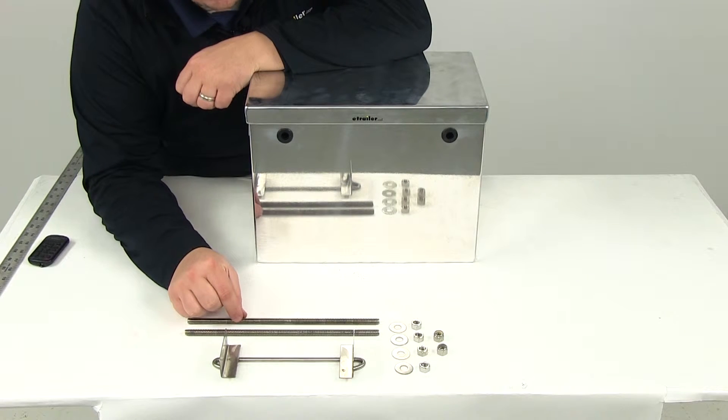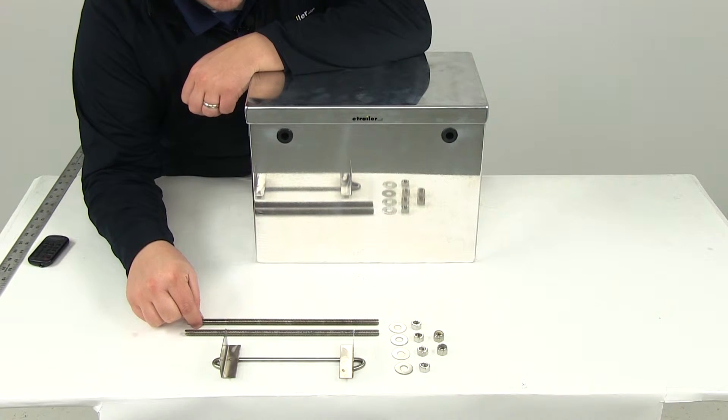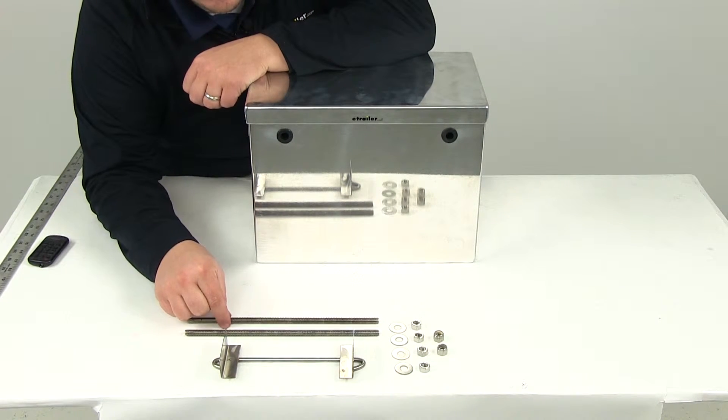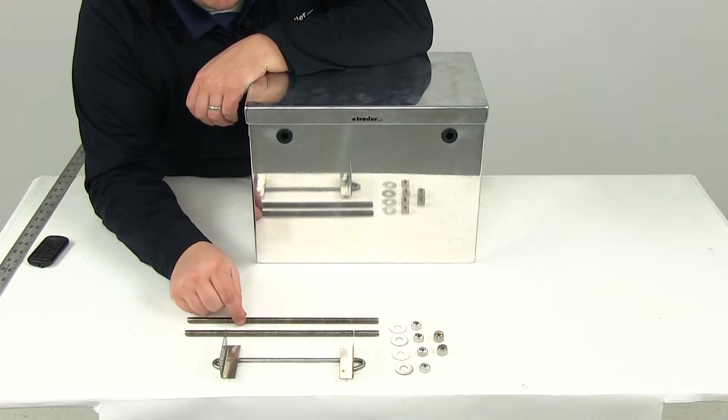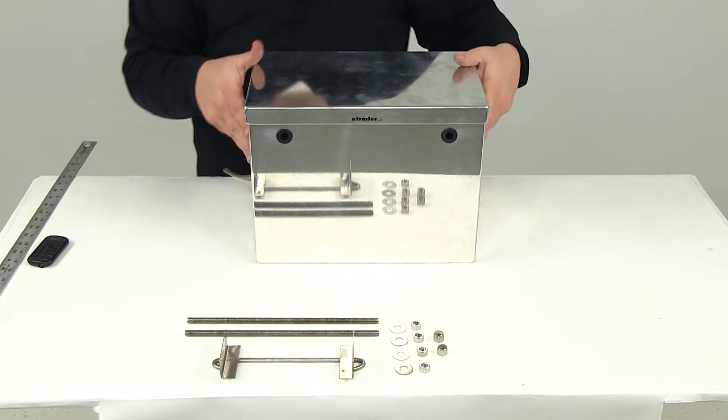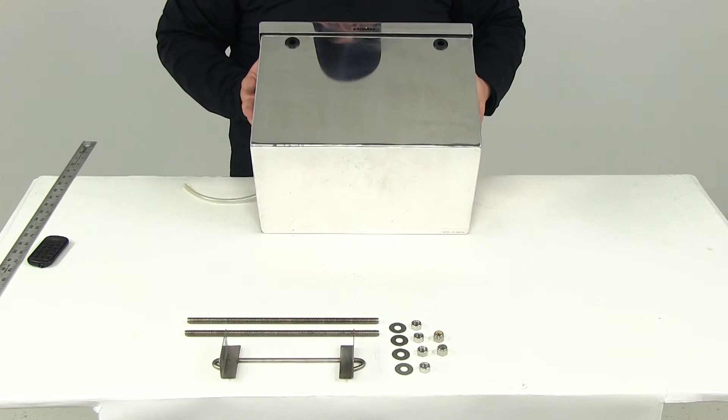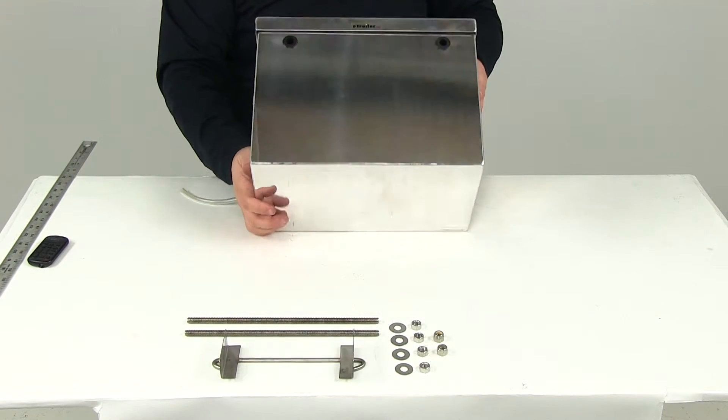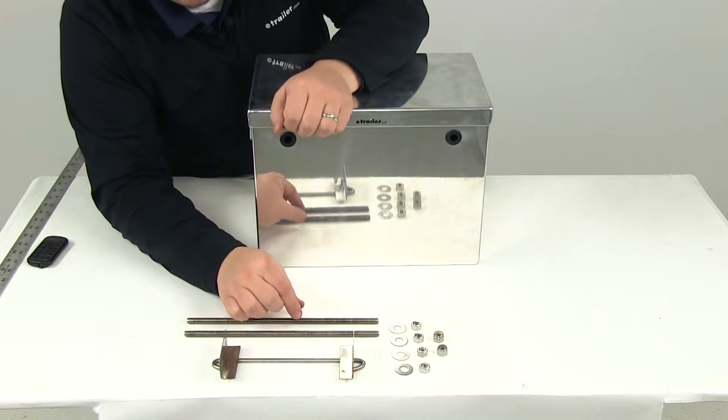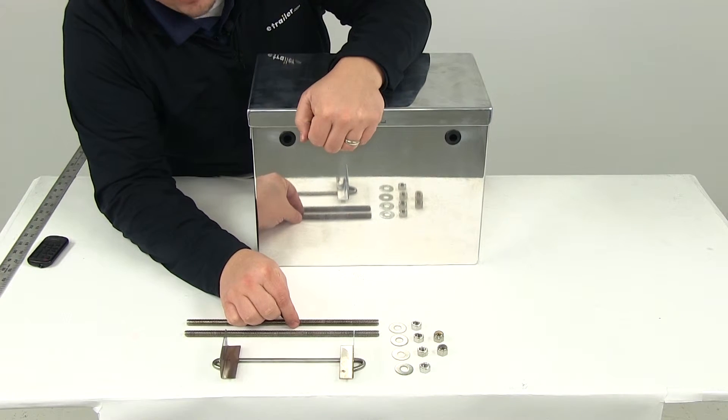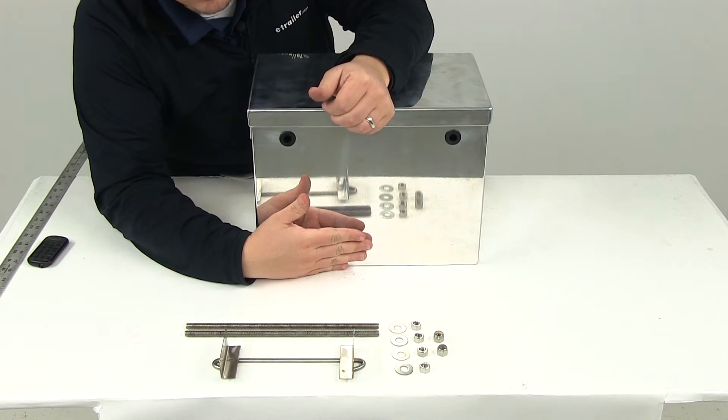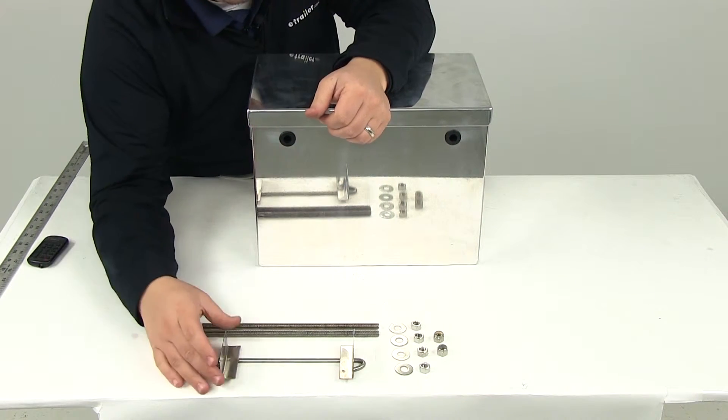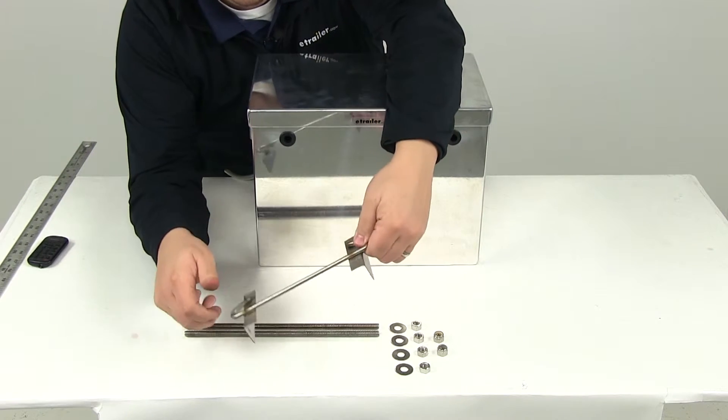Now up here you're going to get the mounting posts. These are designed to go through whatever surface you want to mount the battery box to. You'll have to drill some holes on the bottom of the box if you want to permanently mount this. There's no pre-drilled holes on here. The mounting posts are going to run through your mounting surface and through the battery box on each side of the battery. And then on top it's going to get secured with this right here.